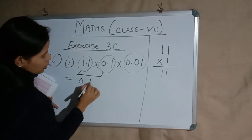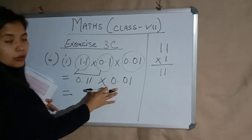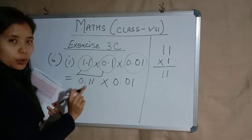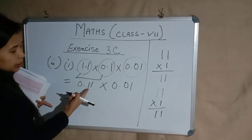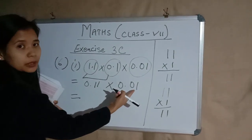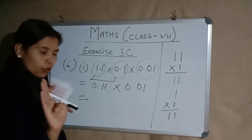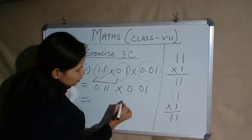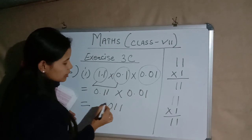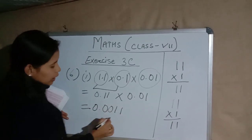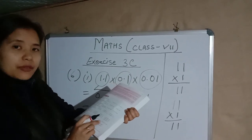Now 0.11 is multiplied with 0.01. Again we consider these as whole numbers: 11 × 1 = 11. Here the decimal is placed after two digits, and here the decimal is placed after two digits, so in the result we place the decimal after four digits. We only have two digits, so we put zeros to make four digits. This gives us our final answer for question 6 part 1.